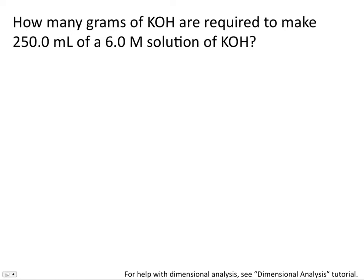Let's try a problem using molarity as a conversion factor. How many grams of potassium hydroxide are required to make 250 milliliters of a 6.0 molar solution of potassium hydroxide? Often students are confused about whether to start with 250 milliliters or the value of 6.0 molar to begin our calculation. The question is asking us how many grams, which is a singular unit. So we'll start with 250 milliliters, because milliliters is also a singular unit.